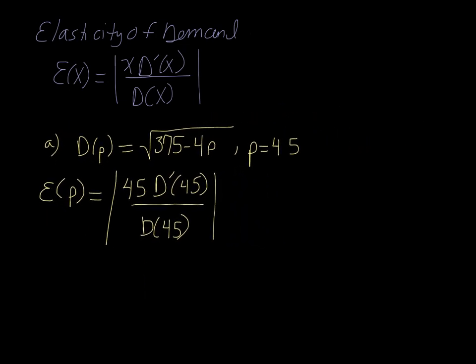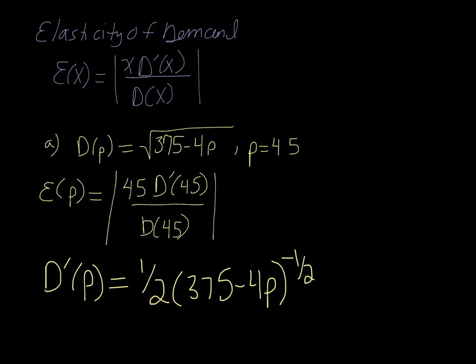Let's start by finding the derivative. D prime of p. Well, remember, square root would mean to the 1/2, so we'd get 1/2, 375 minus 4p. And since the derivative of the inside is not just 1, we need to use the chain rule multiplied by its derivative, which is negative 4. And then if you plug 45 into that, you get negative 0.14322.